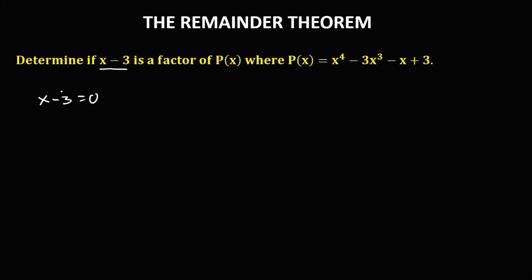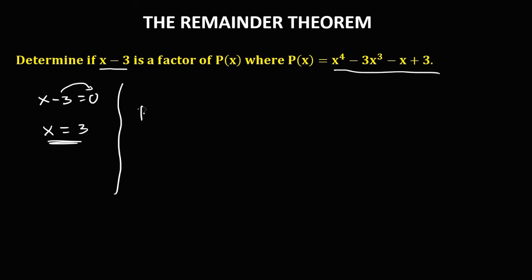To solve for x, transpose the negative 3, so we have x equals positive 3. Then substitute x equals 3 into this equation. So we have p of 3, and that gives us 3 to the power 4 minus 3 times 3 to the power 3, then minus 3 plus 3.